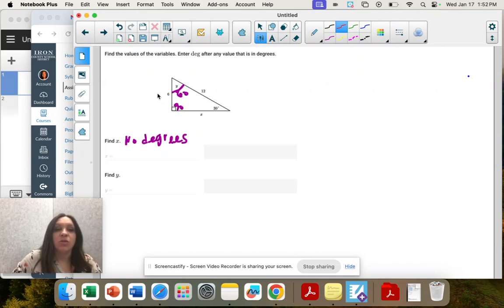So remember, our short leg, we call that A or X. We'll call X. And then it doubles on the hypotenuse, so 2X, 6. 2 times 6 is 12. And then our long leg is 6 times the square root of 3.